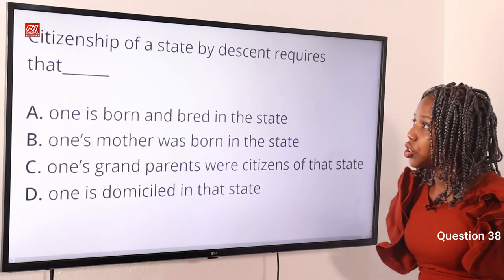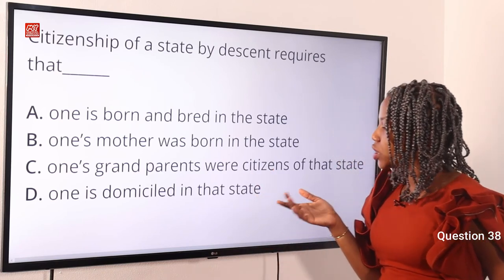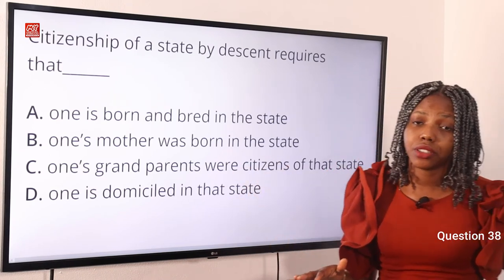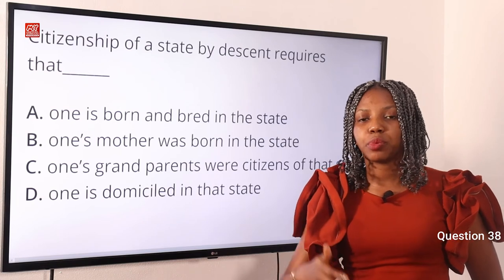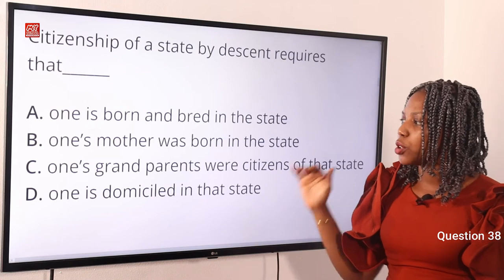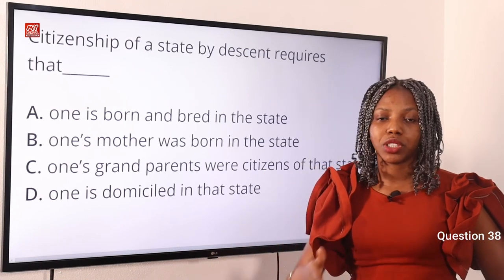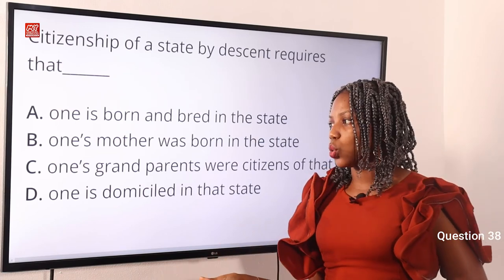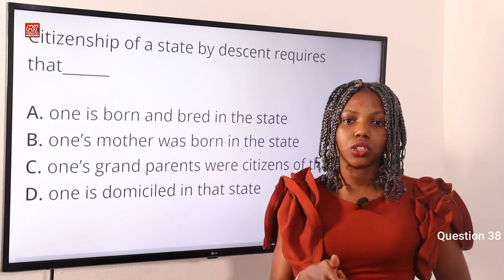Question 38. Citizenship of a state by descent requires that dash. Option A, one is born and bred in the state. Option B, one's mother was born in the state. Option C, one's grandparents were citizens of that state. Option D, one is domiciled in that state. The answer is Option C. Citizenship by descent means the applicant is born in another country but becomes a citizen of their parent's or grandparent's country. One cannot become a citizen simply because one's mother was born there — one's grandparents must be citizens of that state.